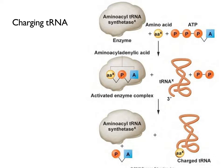Thinking back to the codon charts showing which nucleotides code for specific amino acids—this is how it works in the real world. The specific nucleotides and their order in the anticodon determine which amino acid gets attached to the tRNA molecule. This attachment is not random; it is very specific depending on the nucleotides present in the anticodon.